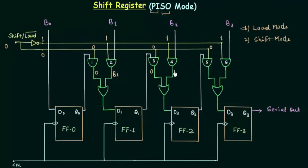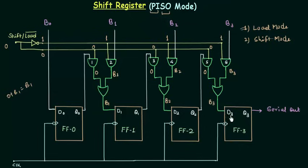Similarly we have 0 for gate 3, B2 for gate 4, 0 for gate 5, and B3 as the output of AND gate number 6. Now we have an OR gate: 0 OR B1 is simply equal to B1. So we have B1 as the input to flip flop number 1. Similarly B2 as the input to flip flop number 2 and B3 as the input to flip flop number 3. So B0 is stored in flip flop number 0, B1 in flip flop number 1, B2 in the second flip flop, and B3 in the third flip flop. The load mode is done and the data is now stored in the flip flops.